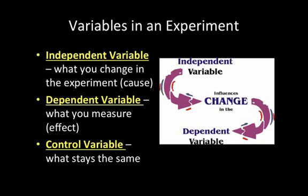Think of it as a cause-and-effect relationship: the independent variable is the cause, and the dependent variable is the effect. We also have control variables — things that stay the same. For example, where the desks are located in the classroom or the type of book used would be control variables. You want to control as many variables as possible so that you know what you changed is what caused the dependent variable — what caused the measurement.